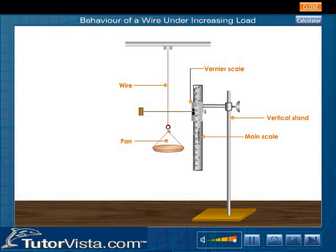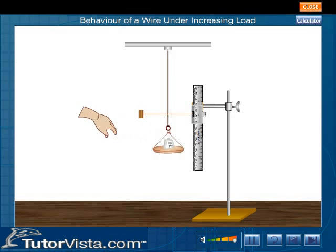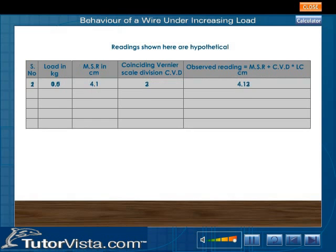The vernier scale is attached to a pointer and can move over the main scale. Place some known weights in the pan and note the extension produced in the wire. Repeat the experiment for different weights and record the elongation produced.